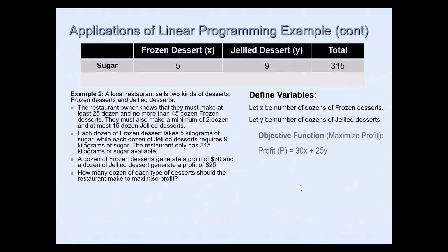Then we'll write the objective function. So in this case we are maximizing profit and profit is given by P = 30x + 25y from the jellied one. So that's how we got this objective function. Then we'll write the system of inequalities. So in this case we use the ingredient sugar and it's 5x + 9y ≤ 315 kilograms because that's the maximum that's available.